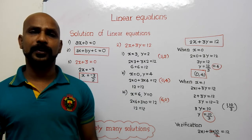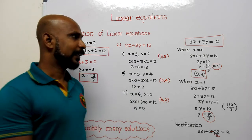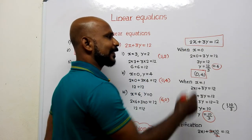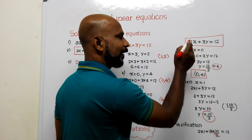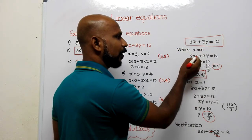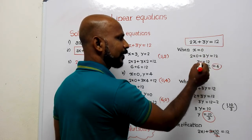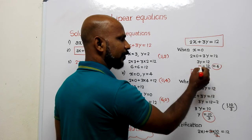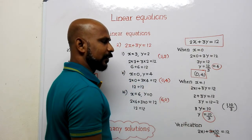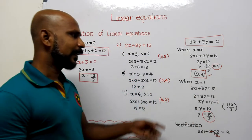For the equation 2x plus 3y equal to 12, I took x equal to 0 and substituted into the equation: 2 into 0 plus 3y equal to 12, so 3y equal to 12, therefore y equal to 12 by 3 equal to 4. Since we applied x equal to 0, the solution is the ordered pair (0, 4).